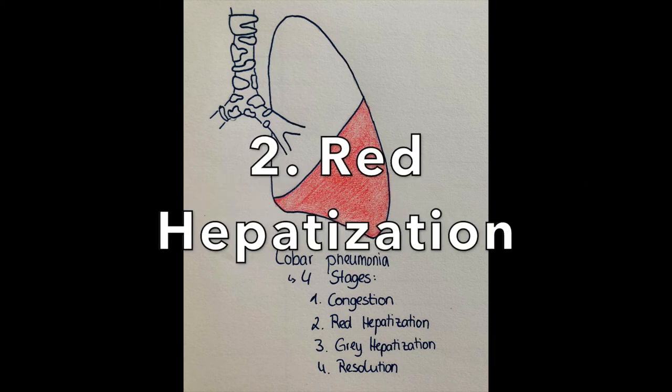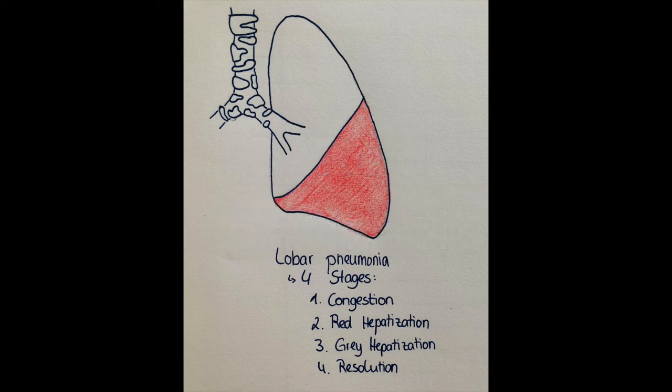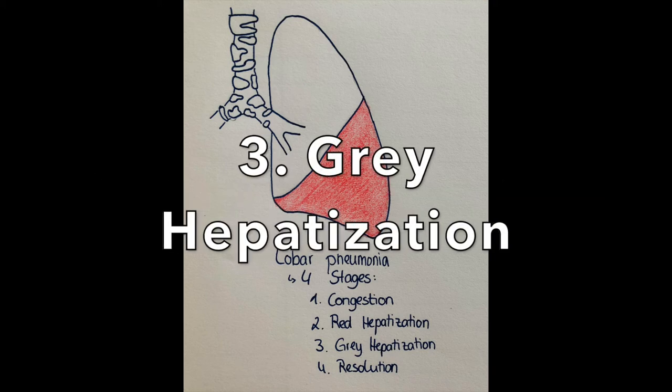The second stage is red hepatisation, usually lasting a few days, where inflammatory infiltrate containing neutrophils, macrophages, lymphocytes, and red blood cells are extravasated from the capillaries. The whole lung appears reddish, thick, and gets a glossy appearance — like a liver with a dark red colour and heavy mass, which is why the stage is called red hepatisation.